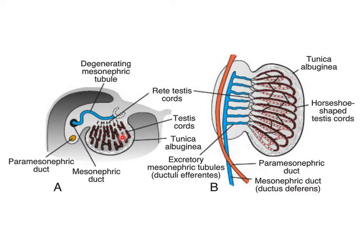The primordial germ cells are found within the testes cords. Degenerating mesonephric excretory tubules are visible, and the mesonephric duct is present. In image B, we see the testes and the genital duct in the fourth month.